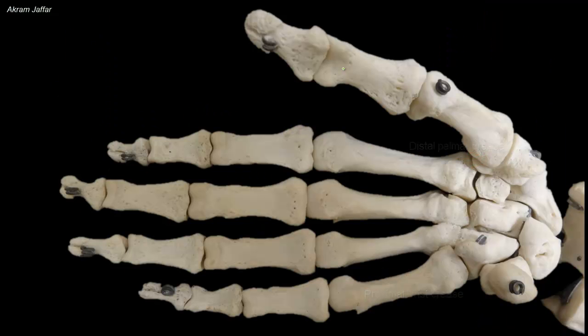The metacarpal bones form the skeleton of the hand between the carpal bones and phalanges. They are composed of five metacarpal bones, numbered from lateral to medial one to five. Each metacarpal bone consists of a base, shaft, and head.